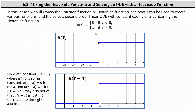The graph of u(t) is shown below. Notice we have an open point at (0, 0) and a closed point at (0, 1), indicating that at t equals zero the function value is one, not zero. A lot of software programs don't plot the open and closed points. And now if we consider u(t − a),